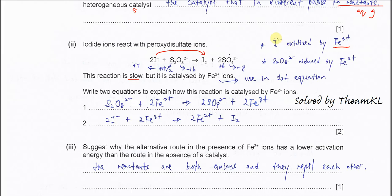Iodide will be oxidized. Therefore, we know that the peroxidisulfate ion will be reduced. You can check the oxidation number: oxygen has 8 atoms, so it is −16. The overall charge is 2−, therefore sulfur must be +14 total. With 2 sulfur atoms, the oxidation number for sulfur is +7.